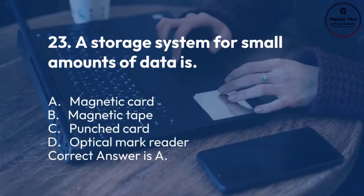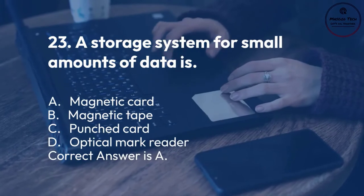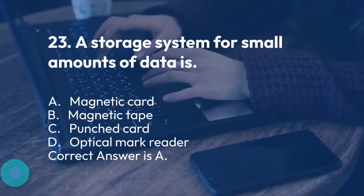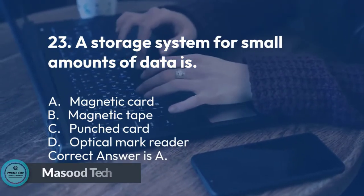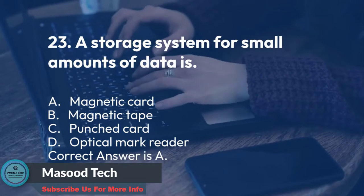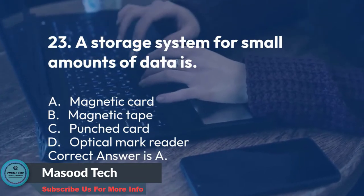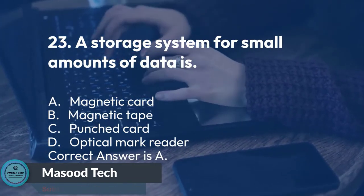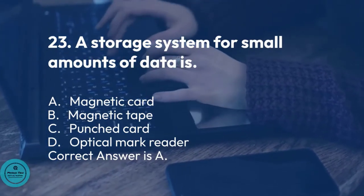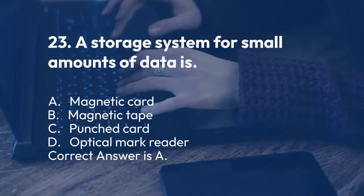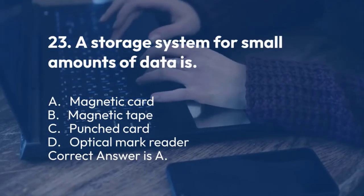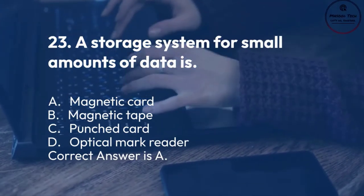Number 23. A storage system for small amounts of data is: A. Magnetic card. B. Magnetic tape. C. Punched card. D. Optical mark reader. Correct answer is A.